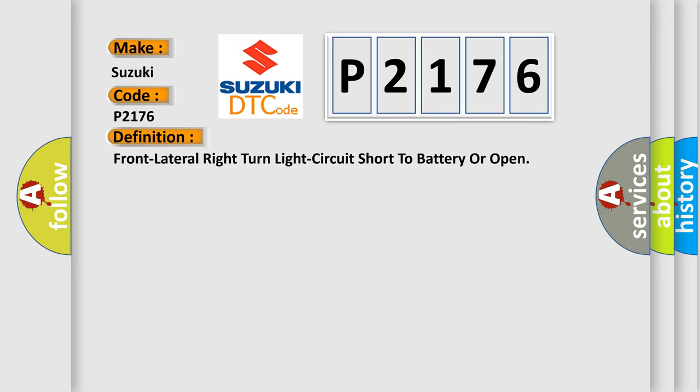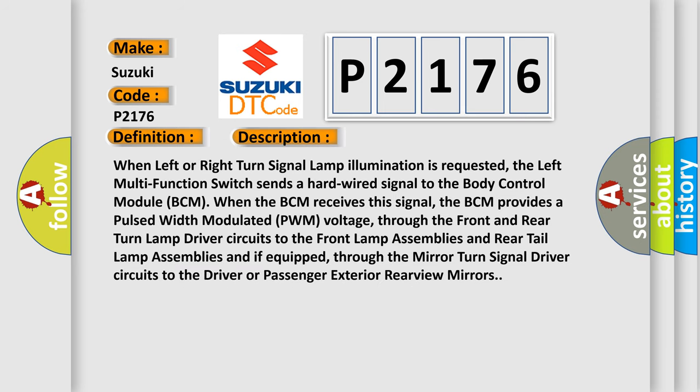When left or right turn signal lamp illumination is requested, the left multifunction switch sends a hardwired signal to the body control module (BCM). When the BCM receives this signal, it provides a pulsed width modulated (PWM) voltage through the front and rear turn lamp circuits to the front lamp assemblies and rear tail lamp assemblies, and if equipped, through the mirror turn signal driver circuits to the driver or passenger exterior rear view mirrors.